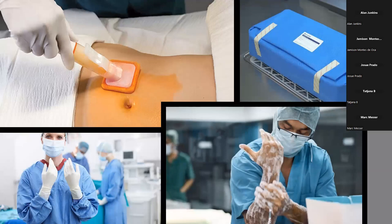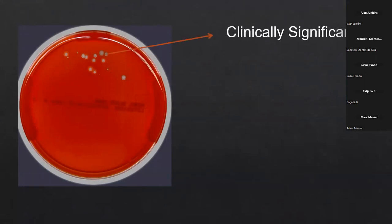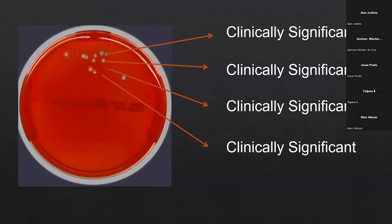Now, I have never performed surgery on a human, but I've seen the TV shows and they all look very careful — lots of washing, lots of sterilization, disinfecting the skin, autoclaving your supplies, everything's very nice and sterile. So if I have a culture that was surgically collected, I'm thinking everything should be clinically significant. But if it looks like scanned growth of skin flora, and we're told it's a surgically collected specimen, I don't expect to see that skin flora.